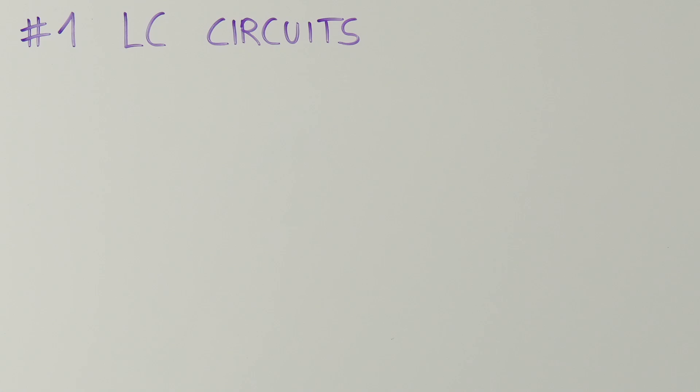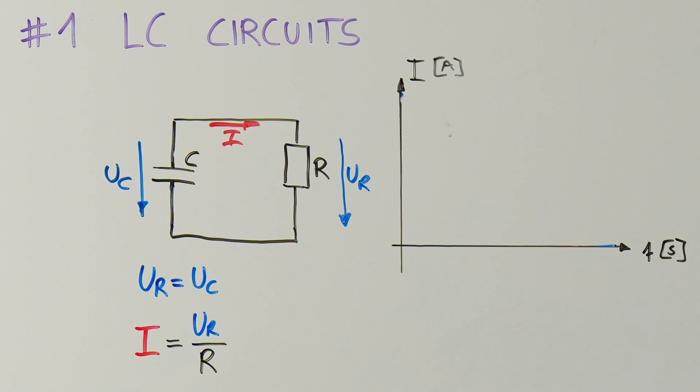The first way to create timing is by using an LC circuit. Let's connect a charged capacitor to a resistor. As soon as the resistor is connected, the current reaches its maximum, as the voltage is highest at the beginning. The current then slowly decreases until the capacitor is uncharged.